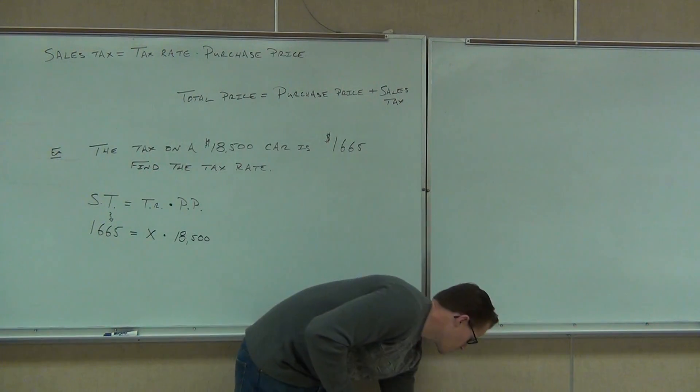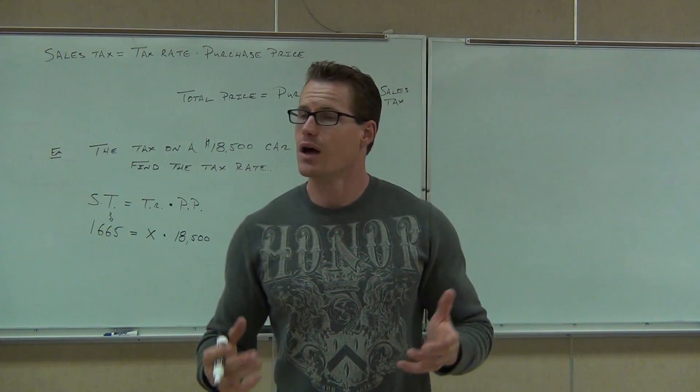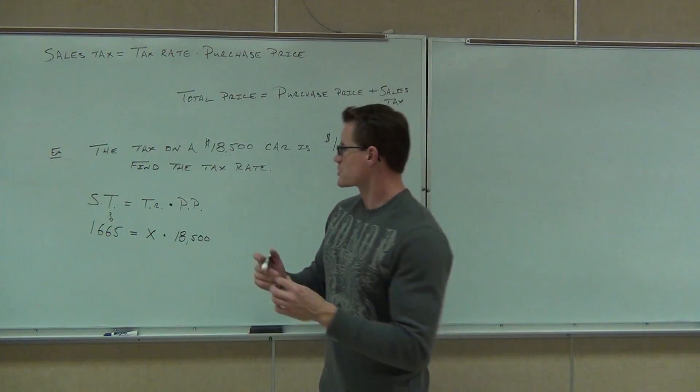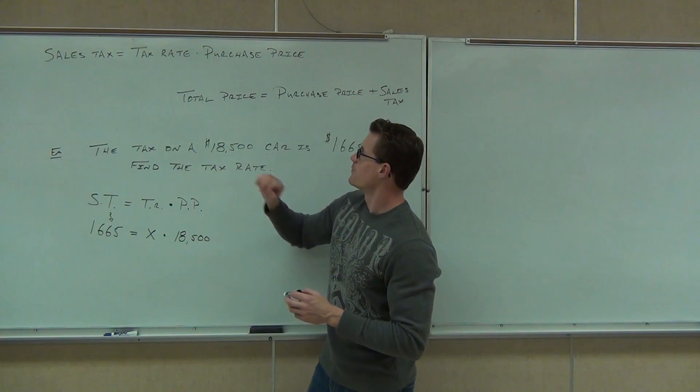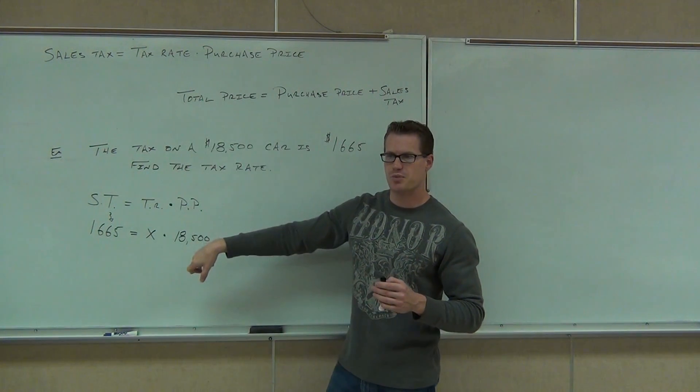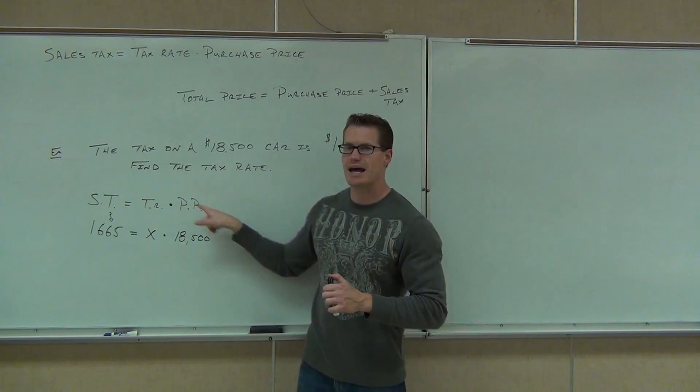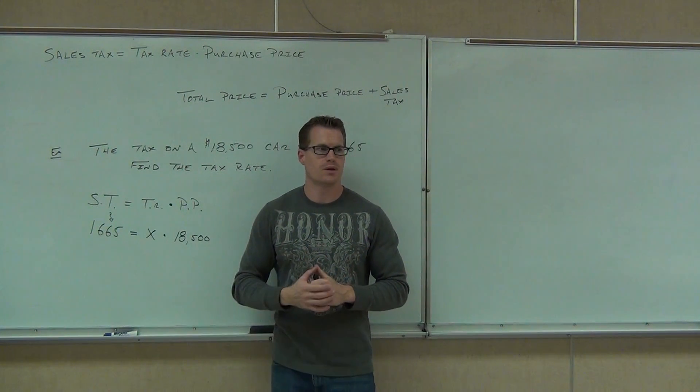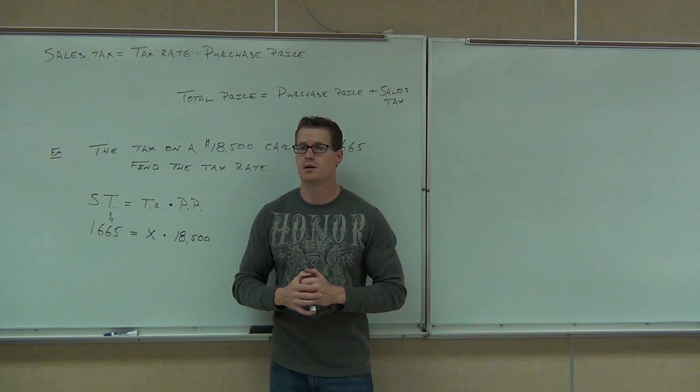So sometimes we can still use the same formula, only we're solving for a different thing here. Instead of actually finding the sales tax, you're given the sales tax. Instead of using the tax rate, we're finding the tax rate, and we still know the purchase price. Is there a way you could solve this for X? Yes. How would you solve for X? Divide. Divide by what? $18,500.